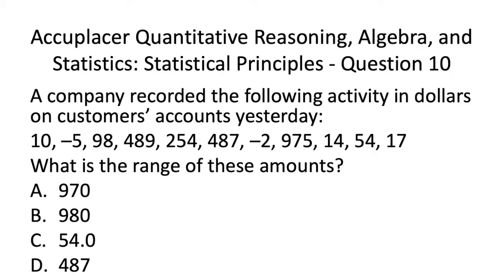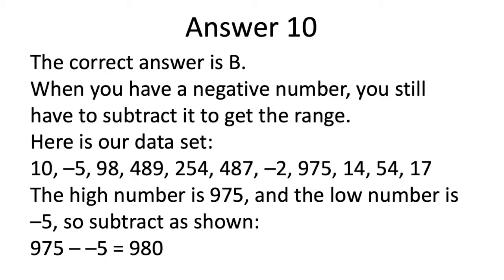Let's have a look at Acuplacer QAS Statistics Practice Test Question 10. The correct answer is B. When you have a negative number, you still have to subtract it to get the range. Here is our data set again. The high number is 975 and the low number is negative 5. So subtract as shown to get a range of 980.